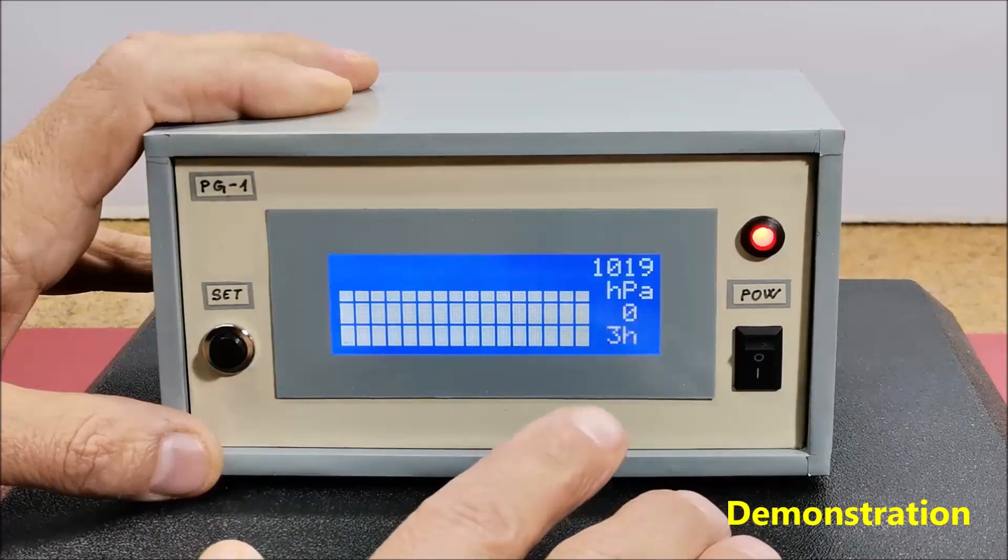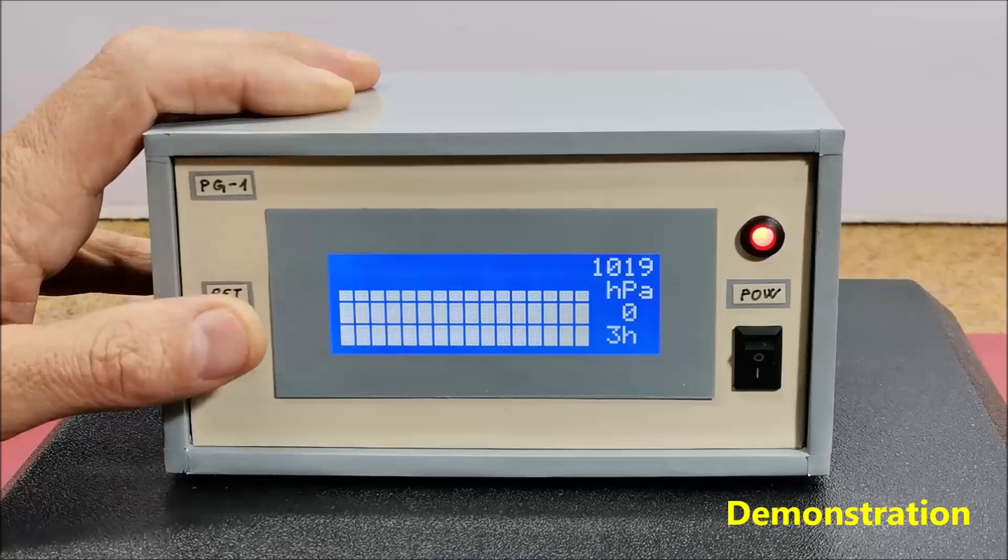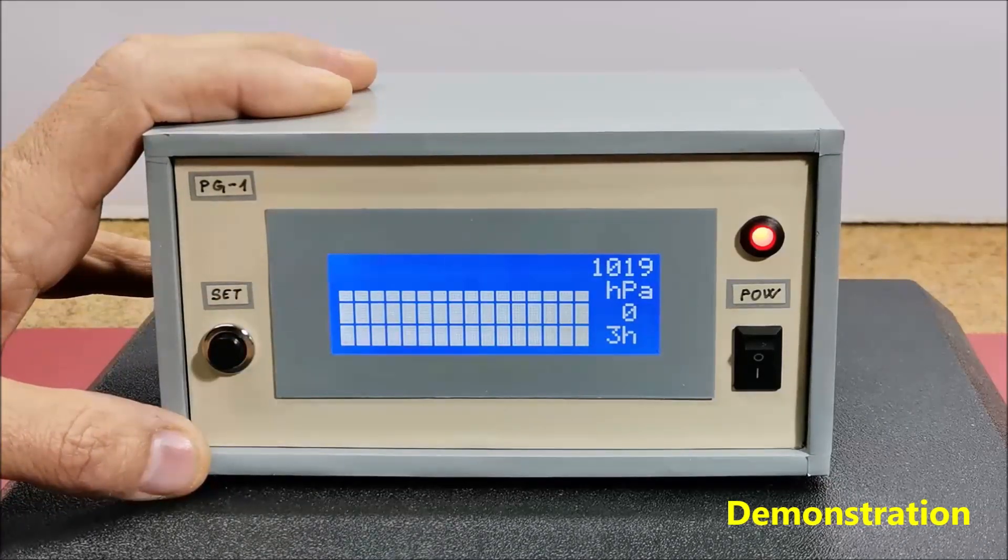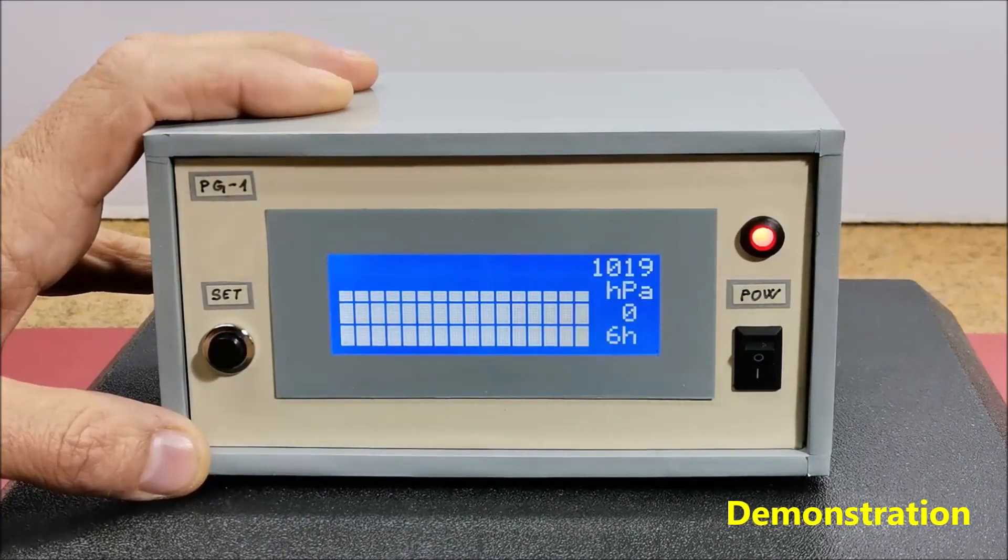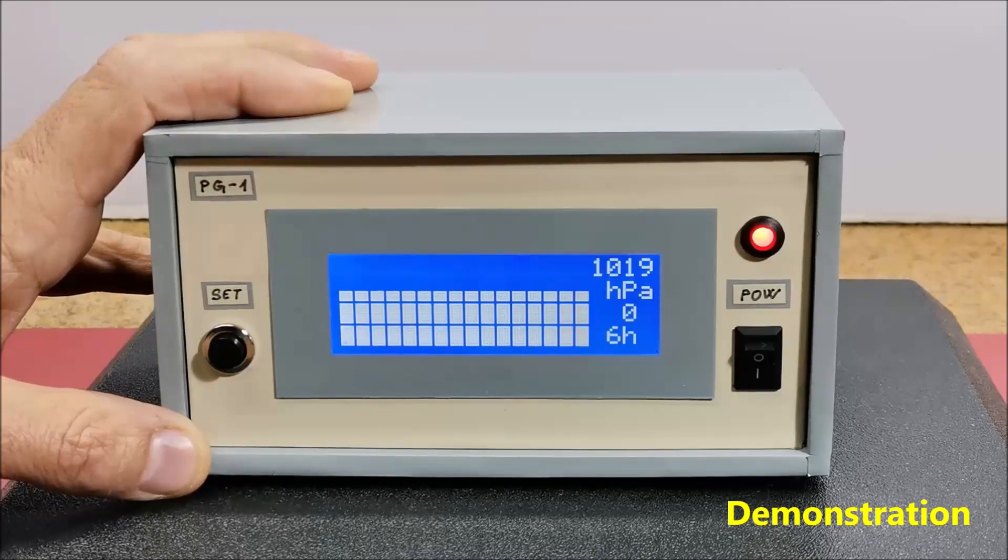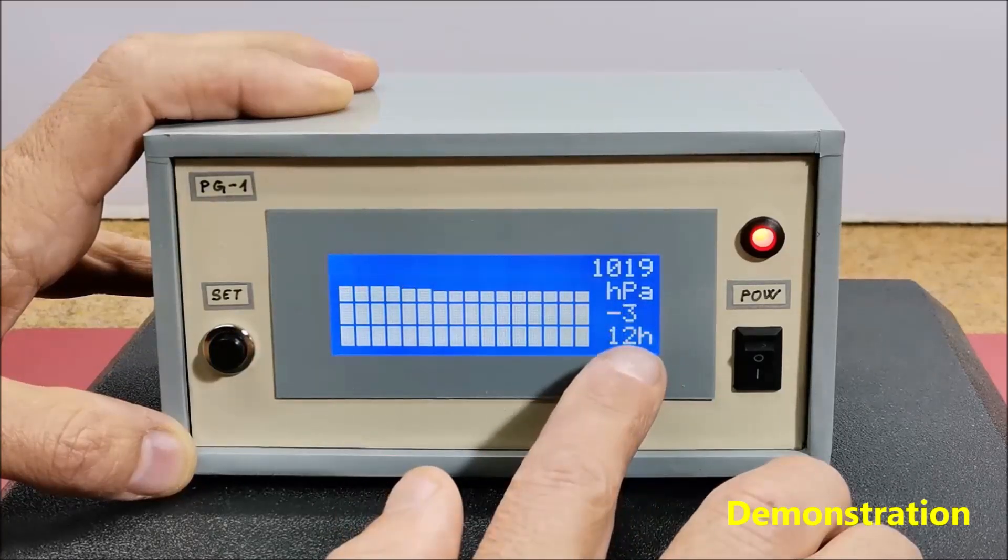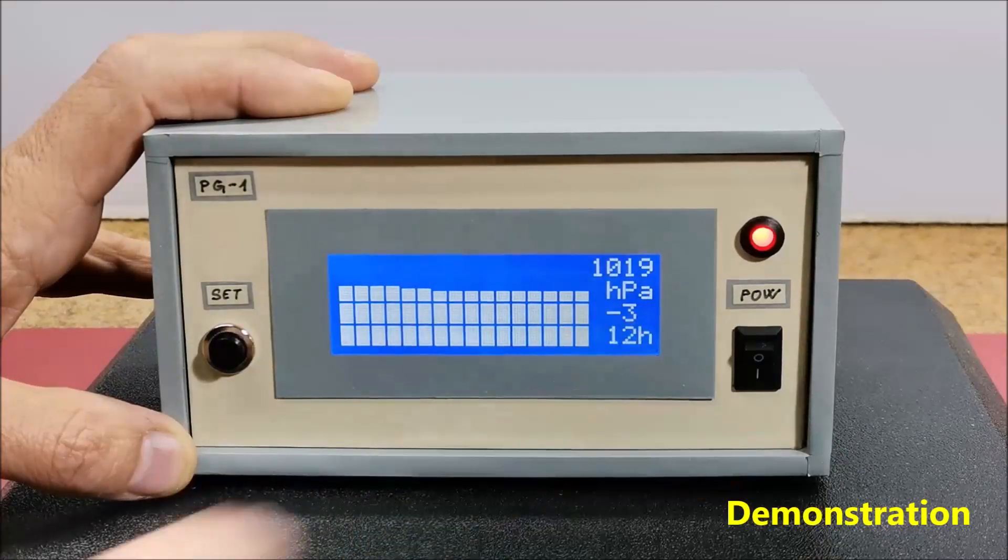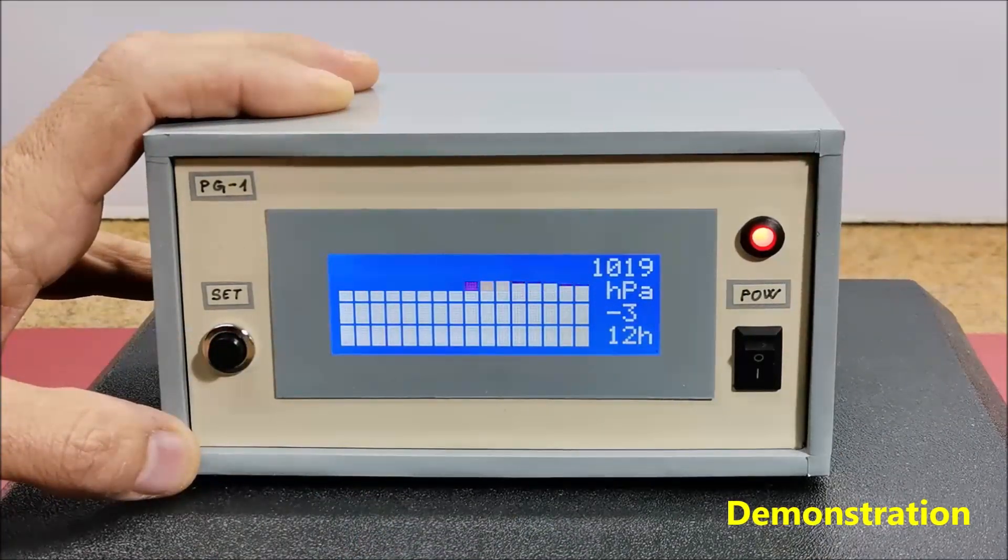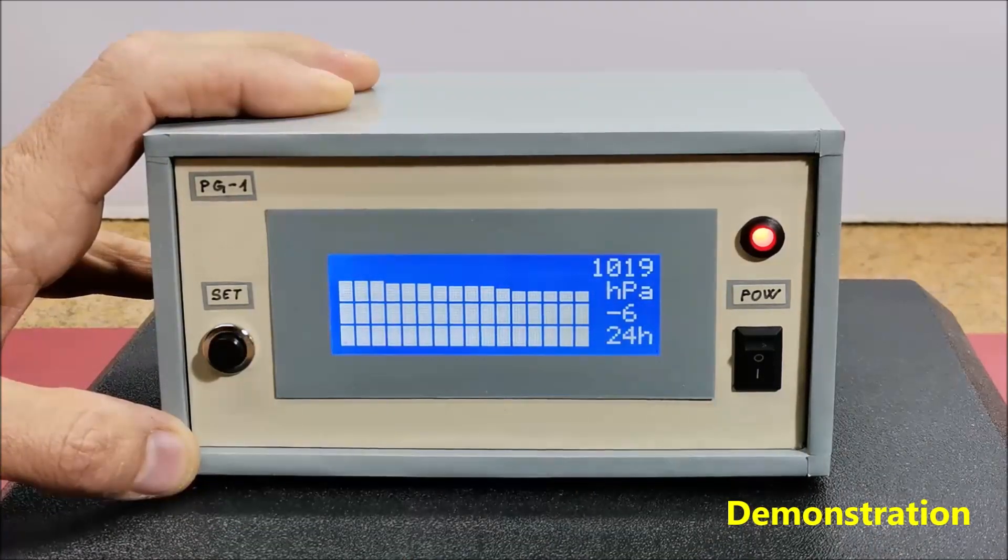Pressure change on the last 3 hours is 0. Also on the last 6 hours there is no change in atmospheric pressure. From 12 hours ago to this moment the pressure has dropped by 3 hectopascals.